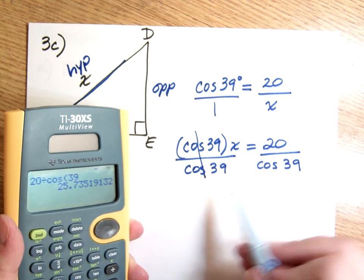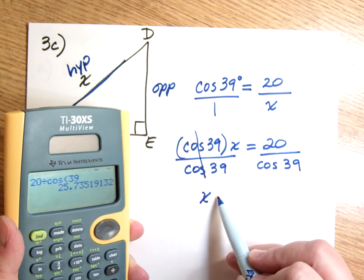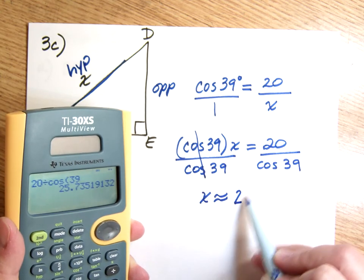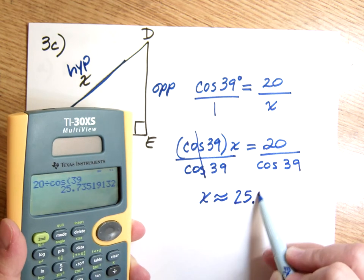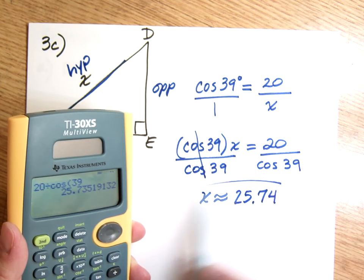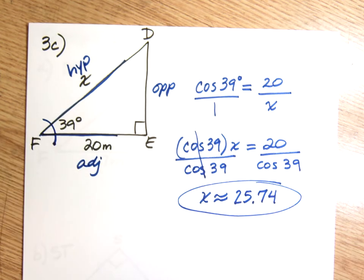Remember, if you haven't already, especially if you're using a graphing calculator, to make sure you are in degrees, because these angles are in degrees, and so we have to do our calculations in degrees. If you, for instance, for that problem, got 75 instead of 25.74, then you are not in degrees. Okay, you'll get a completely different answer.